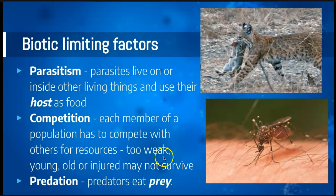Predation is also a biotic limiting factor. We've used the terms predators and prey before — you've learned it in grade seven and grade eight. Whether there are a lot of predators in the area will affect how much of the prey is there. So that's it for this lesson — short and sweet. Move on to the other videos and look at the human factors that can affect the ecosystem.